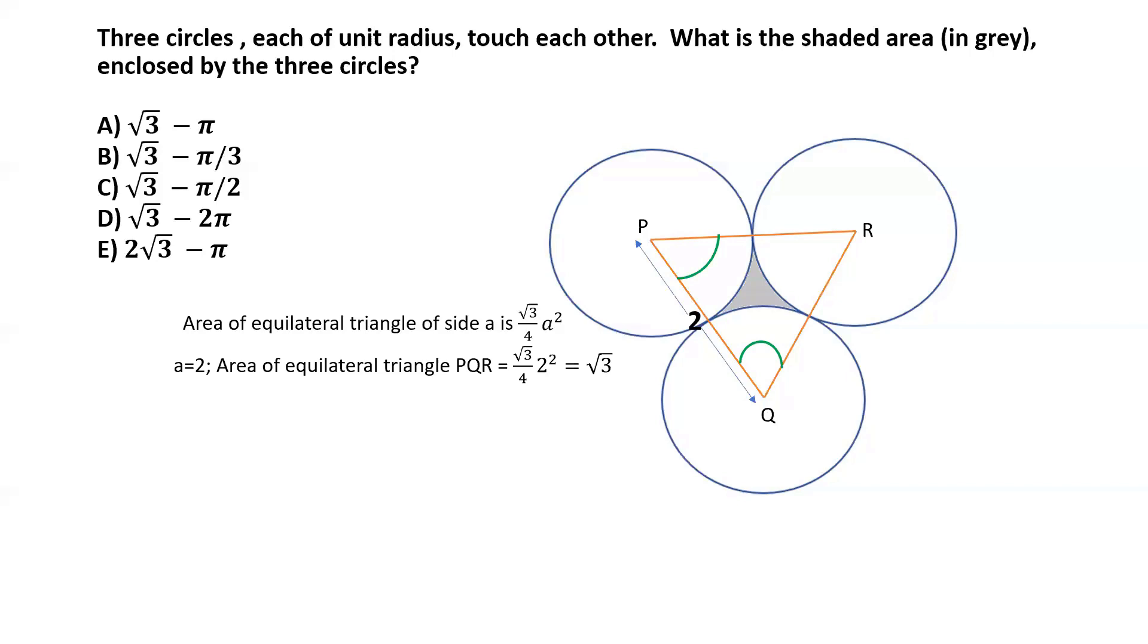Now, since this triangle PQR is equilateral, each of these sector angles is going to be 60 degrees, because we know that the angles of an equilateral triangle are all equal, and each is equal to 60 degrees.